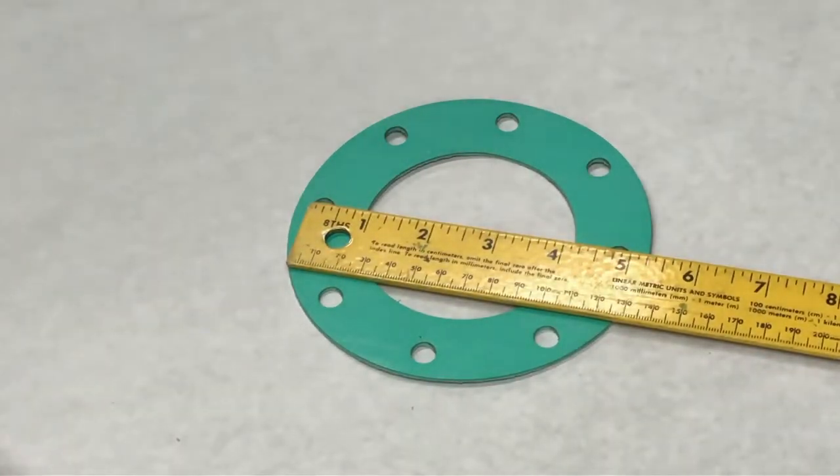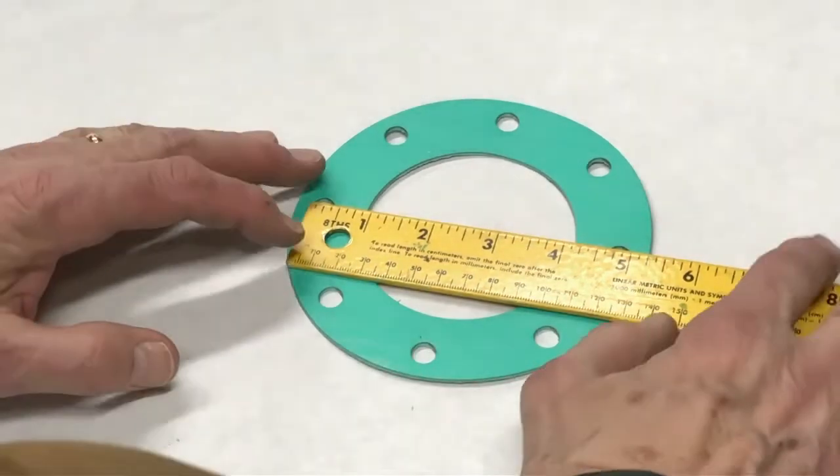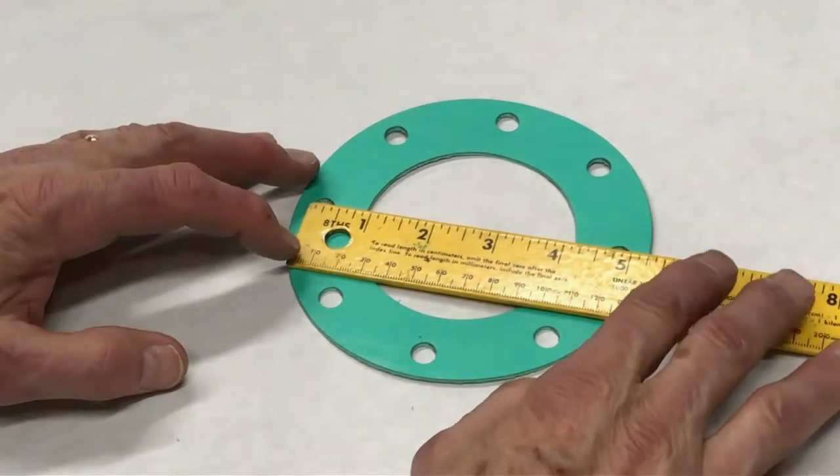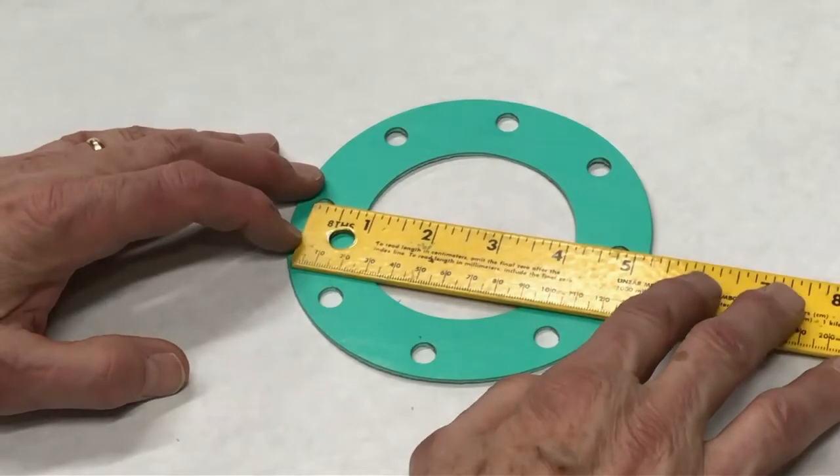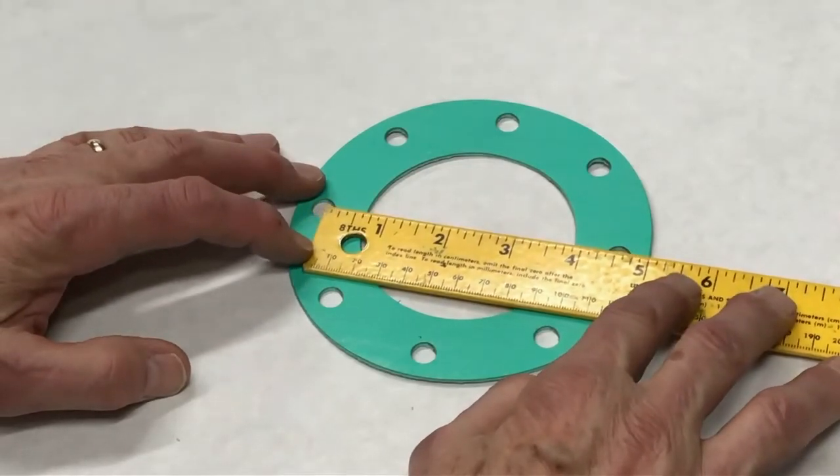Now for the most critical part, the diameter of the bolt circle. The easiest way is going across the diameter from one side to the same side across the diameter.